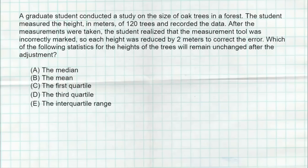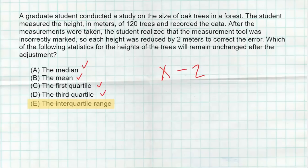Question number six. The correct answer is E. We have a sample of 120 trees and found every measurement needs to be reduced by two meters. This affects the median and the mean — both will go down. The third and first quartiles are measures of position, so they also go down. However, addition or subtraction of a constant does not impact measures of spread. The entire data set shifts down, but that doesn't change the IQR, the range, or the standard deviation. Measures of spread are not impacted by adding or subtracting a constant.